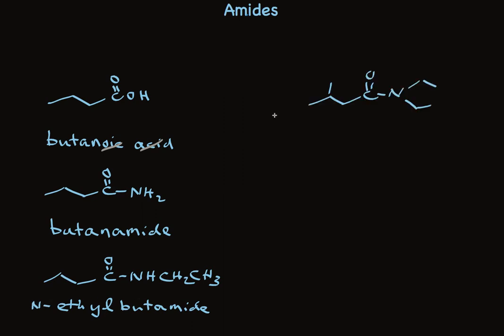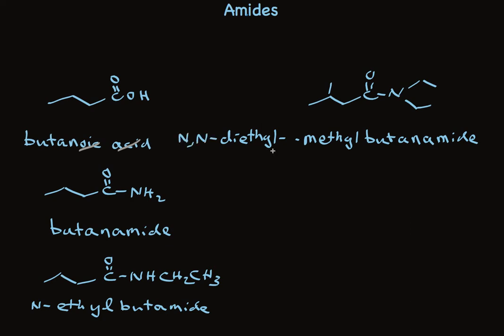Here's a butanamide that has two ethyl substituents and a methyl substituent. We'll put the substituents in alphabetical order. Ethyl comes before methyl. There are two ethyl groups. The ethyl groups are on the nitrogen. So it's N,N-diethyl. And we number starting with the carboxyl group as one. The methyl group is on the three carbon. N,N-diethyl, 3-methyl butanamide. So that's the system.